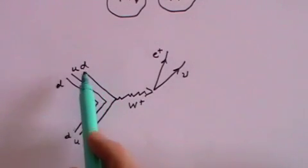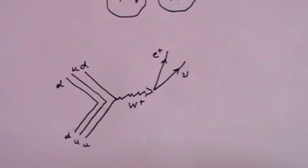So W bosons convert up quarks into down quarks with the emission of a W plus boson, or down quarks into up quarks with the emission of a W minus boson.